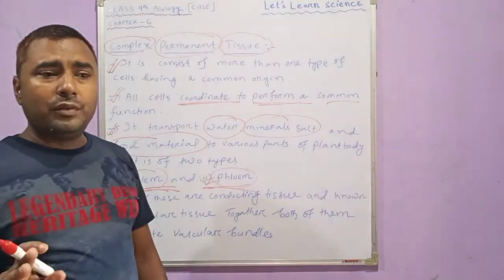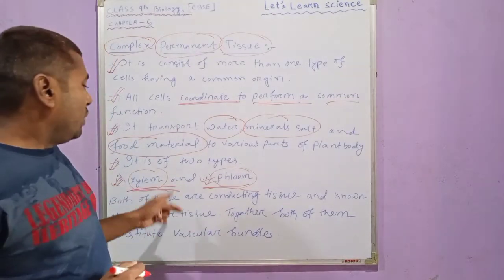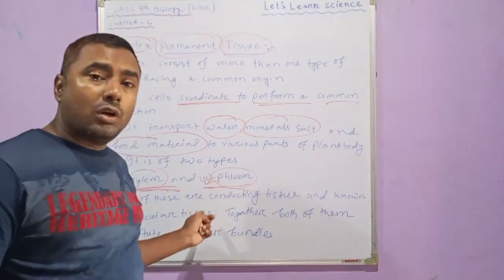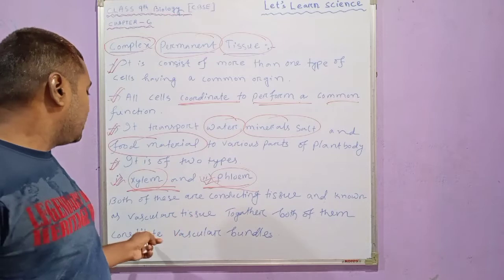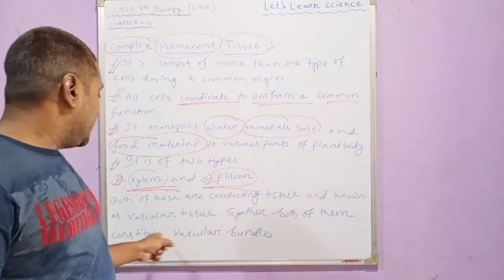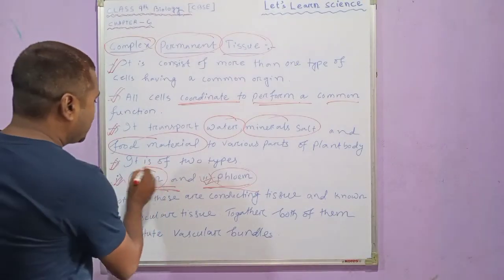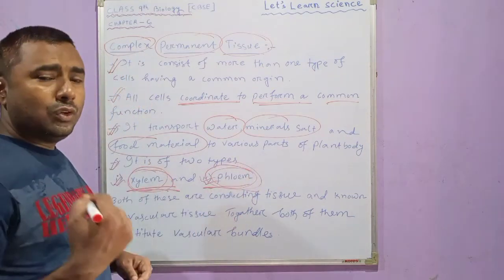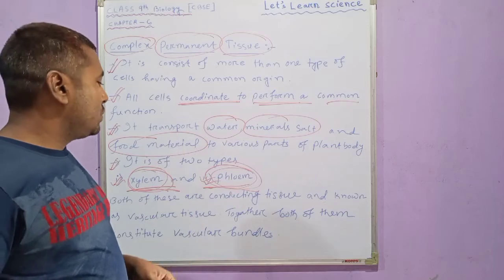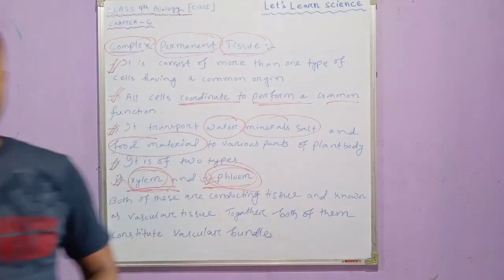The two types are xylem and phloem. Both xylem and phloem are conducting tissues and they are also known as vascular tissue. Together, xylem and phloem constitute a vascular bundle in the plant body. Now we will learn about the different cells that build up xylem and phloem and their functions in detail one by one.